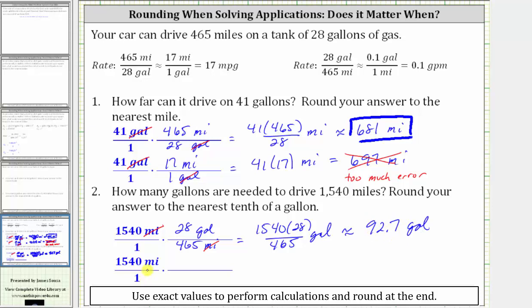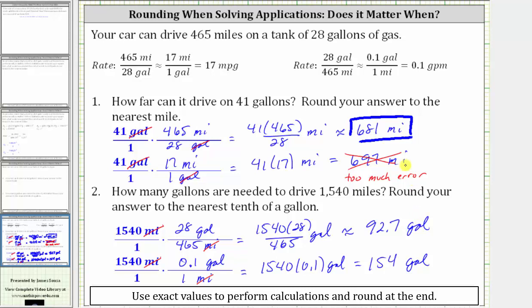Now let's answer the question again using the rounded rate of 0.1 gallons per one mile — this is the way we should not do it, because we will have more of an error. Notice how the units of miles simplify out, leaving us with 1,540 times 0.1 gallons. 1,540 times 0.1 is equal to 154. Notice the big difference: our correct estimate should be approximately 92.7 gallons, not 154 gallons, because using the rounded rate to perform calculations introduces too much error. I hope you found this helpful.